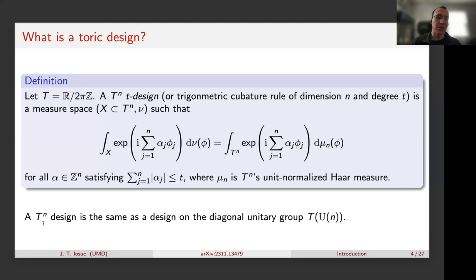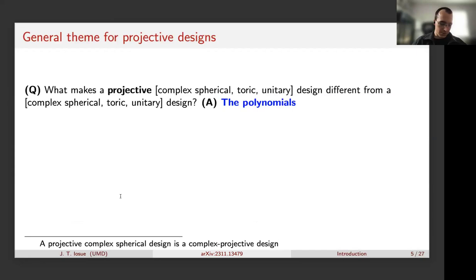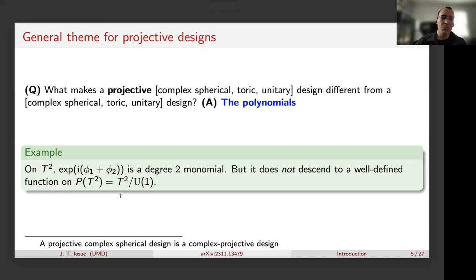One hint that these come up in quantum information: toric designs are the same as designs on the maximal torus of the unitary group. A general theme is: what defines a projective design, or what makes projective designs different? Really the answer is the polynomial structure. On the two-torus you must integrate monomials like e^{i(φ_1 + φ_2)}, but you don't have to integrate such a monomial on the projective two-torus because it's not well-defined there.